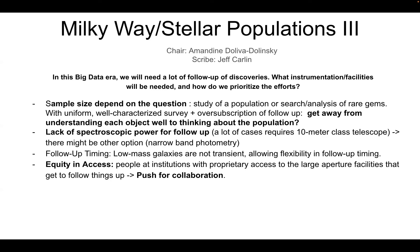People noted that in this era of big data with large homogeneous surveys, we will see a lot of population discoveries made in a uniform way. So maybe we should move away from trying to understand one object precisely and instead think about populations. It was also clear there will be oversubscription problems with spectroscopic follow-up for different science cases, because many require high precision instruments like 10-meter class telescopes.